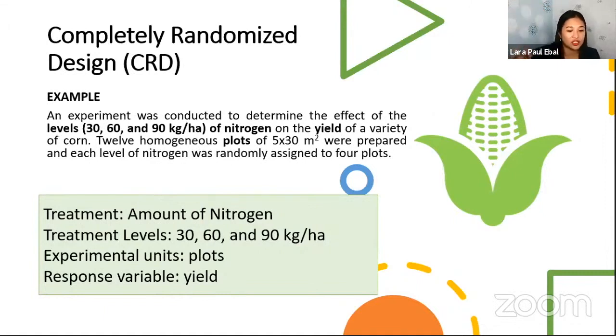The experimental units are the plots where the nitrogen was applied. And then the response variable is the yield, of course.